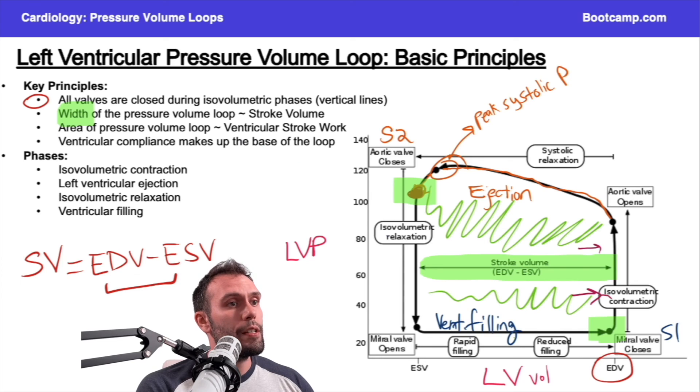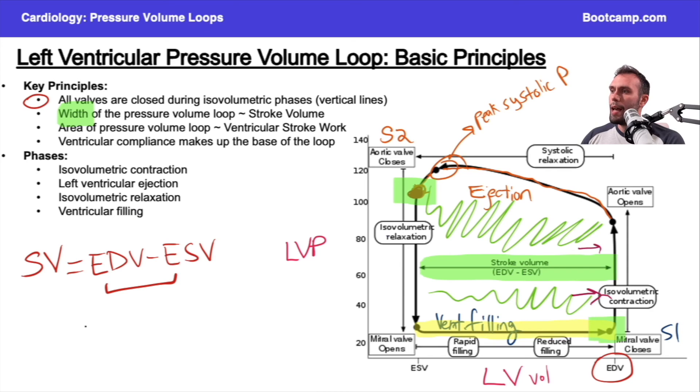The last part is the base of this actually makes up the ventricular compliance. This line here on the bottom that I'm highlighting in yellow usually will tell you the ventricular compliance. Remember, if you have a higher compliance, if your veins, for example, have a higher compliance, they're able to store more blood.